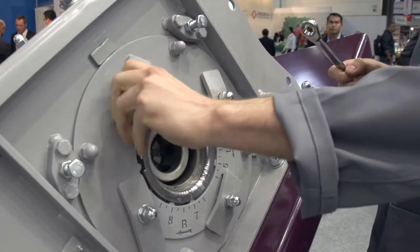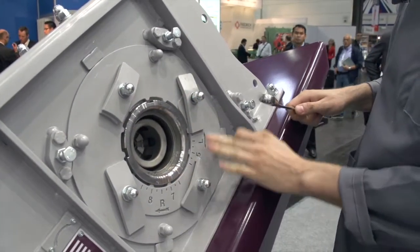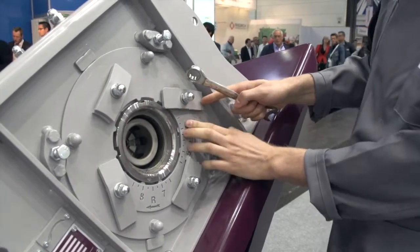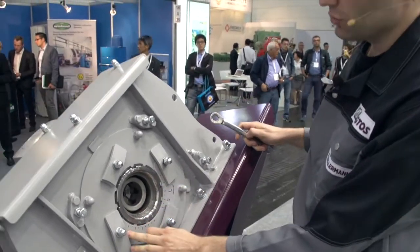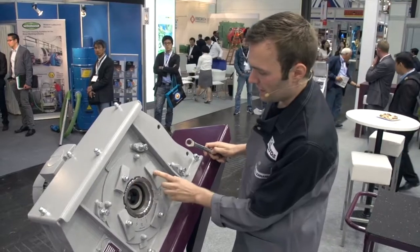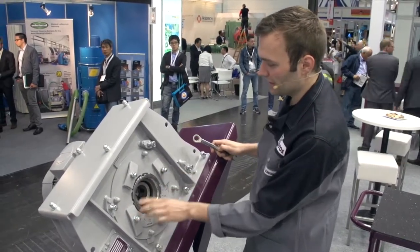Prior to removing the guiding sleeve, note down the setting. There is a mark on the turbine housing. It indicates the settings from 3 to 9. In our example, the guiding sleeve is set to 7. The notch on the edge of the guiding sleeve should be aligned with the specified mark on the turbine housing.